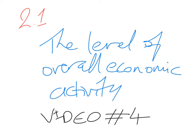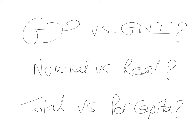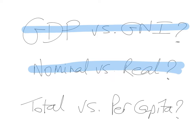This is video number four of unit 2.1, the overall level of economic activity. Unit 2.1 of the IB syllabus — this is the first unit in macroeconomics, and this is video number four in the series. In this video, I'm going to distinguish between the concept of GDP and GNI, the difference between nominal and real measurements of GDP and GNI, and the difference between total and per capita measurements in measuring national income.